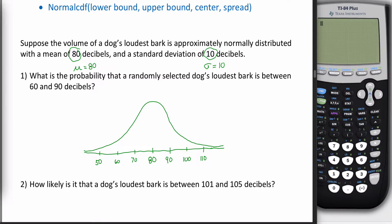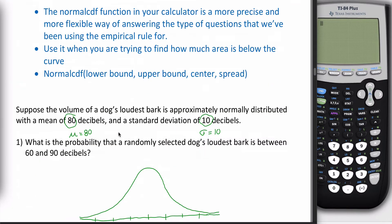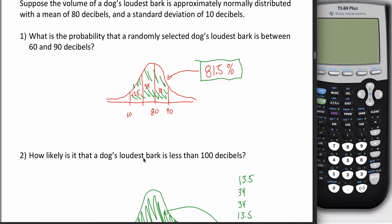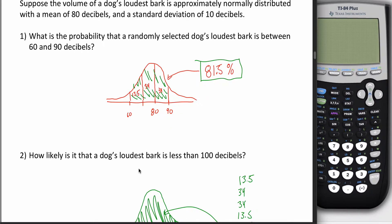Once you draw that picture, you're going to try to figure something out. That question — the probability a dog's bark is between 60 and 90 — is asking me to figure out the area between 60 and 90. If you remember, we did this with the empirical rule. It was kind of a hard empirical rule example. We split it at 80: the area from 60 to 80 was about 47.5%, and from 80 to 90 was 34%, giving us 81.5%. Turns out that's not exactly 81.5% — it's close, but the empirical rule only estimates.